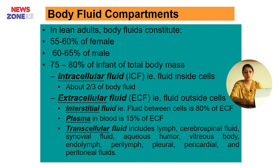Now, body fluid compartments. A lean adult's body fluid constitutes about 55 to 60 percent in females, and 60 to 65 percent in males, and 70 to 80 percent in infants of total body mass. The body fluid compartments are divided into two compartments: intracellular fluid and extracellular fluid.